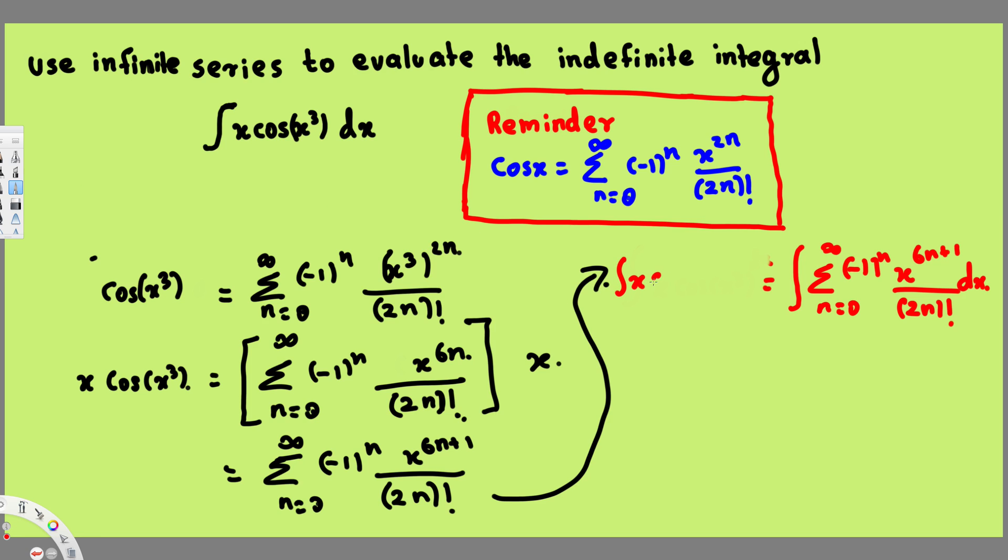The integral of x cos(x³) dx. Now here what we have to do is: this is same as integrating this one. So when we integrate this one, the only thing that's going to change is this one, because the x is related to only this one.